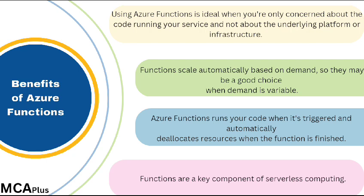Azure Functions runs your code when it's triggered and automatically deallocates resources when the function is finished. In this model, you're only charged for the CPU time used while your function runs. Functions can be either stateless or stateful. When they're stateless — the default — they behave as if they're restarted every time they respond to an event. When they're stateful, called durable functions, a context is passed through the function to track prior activity.